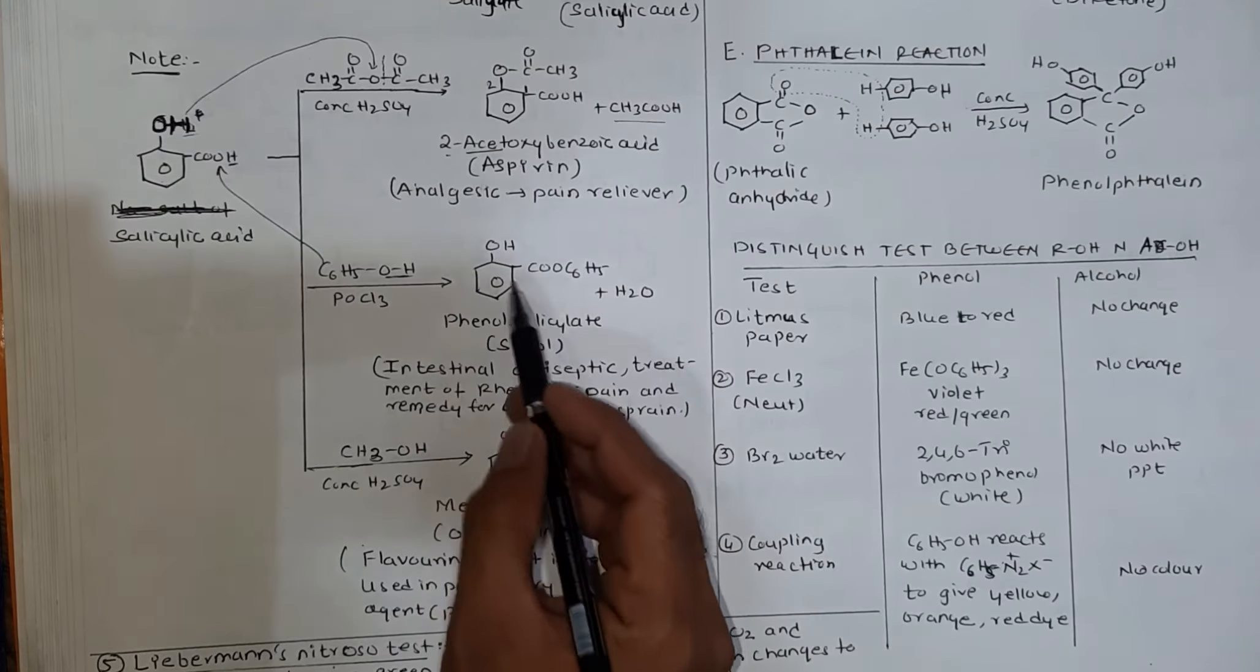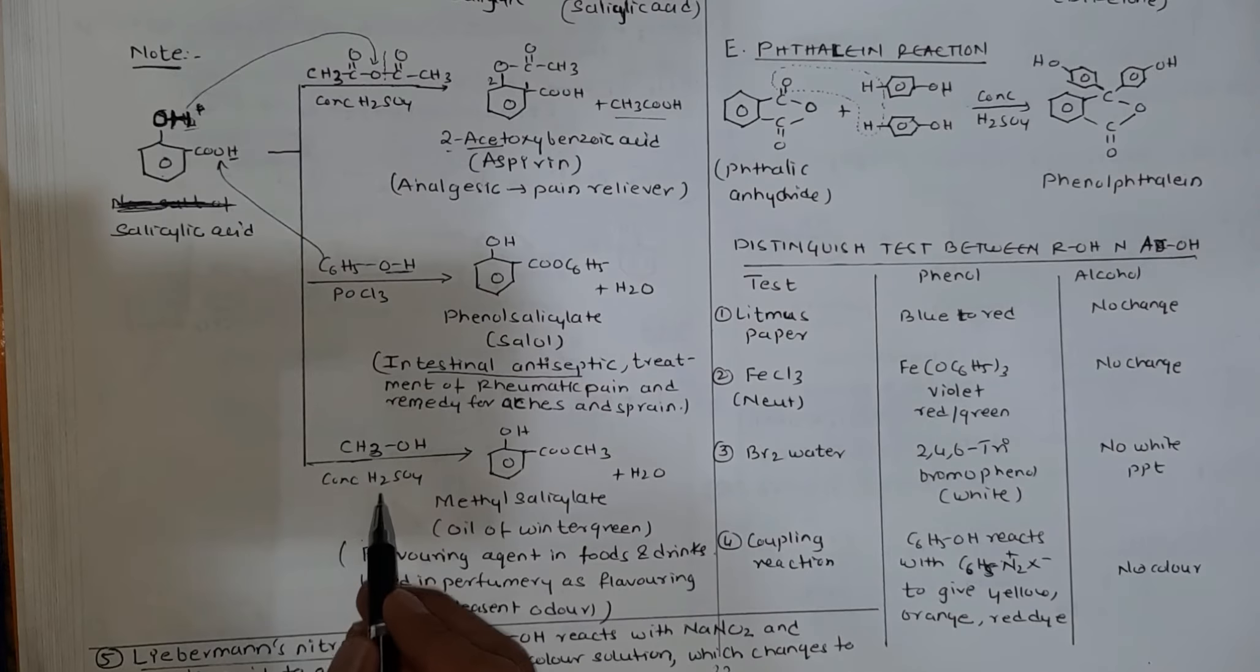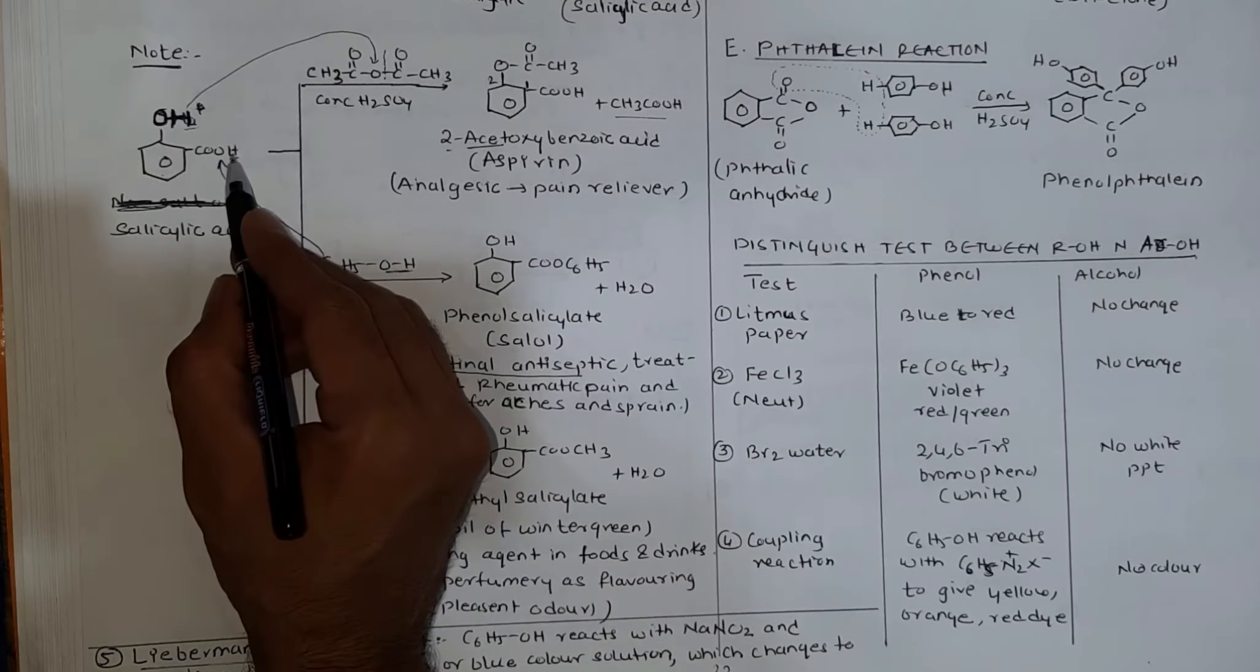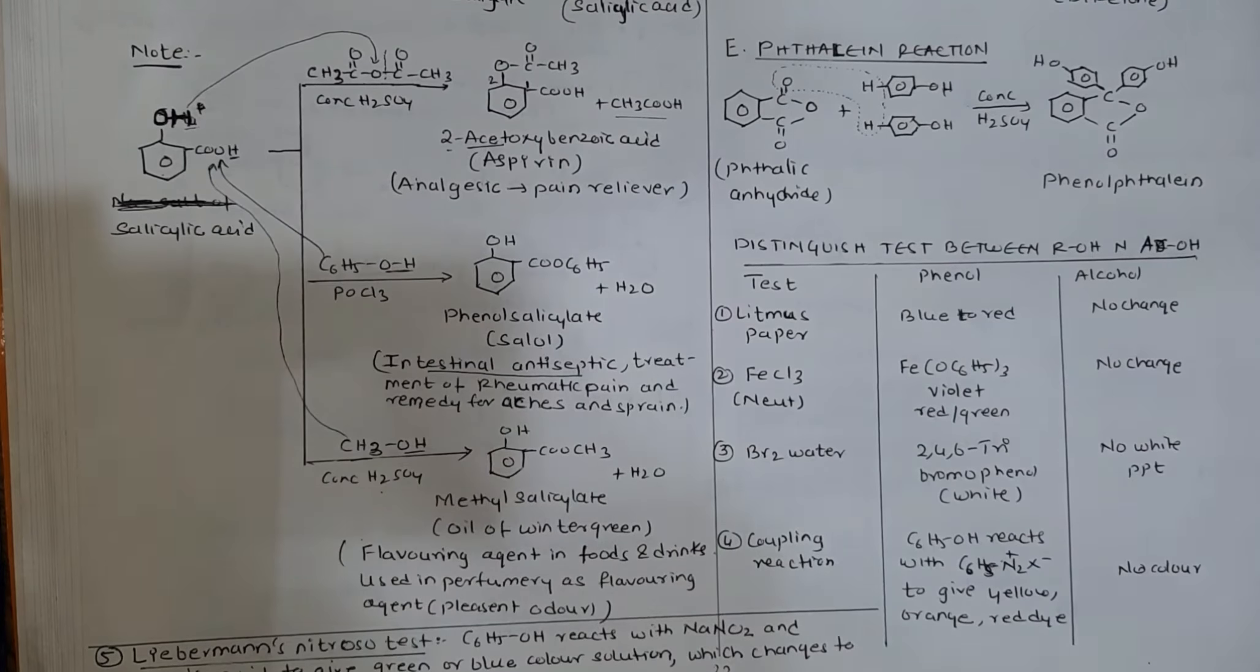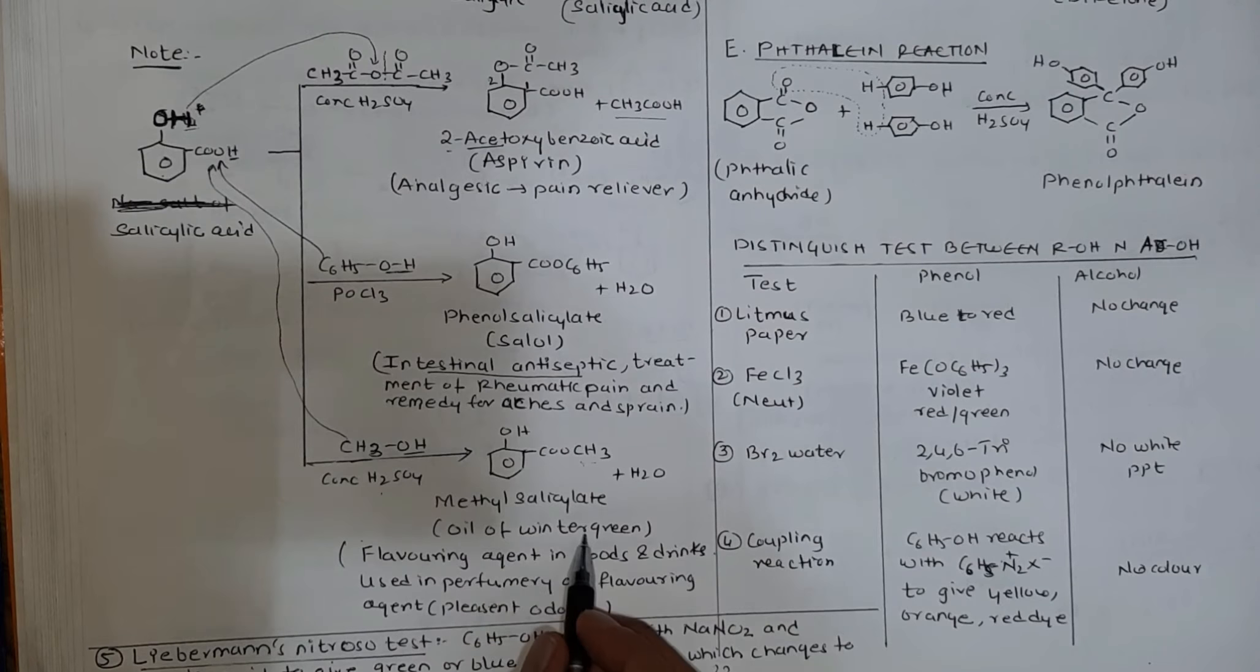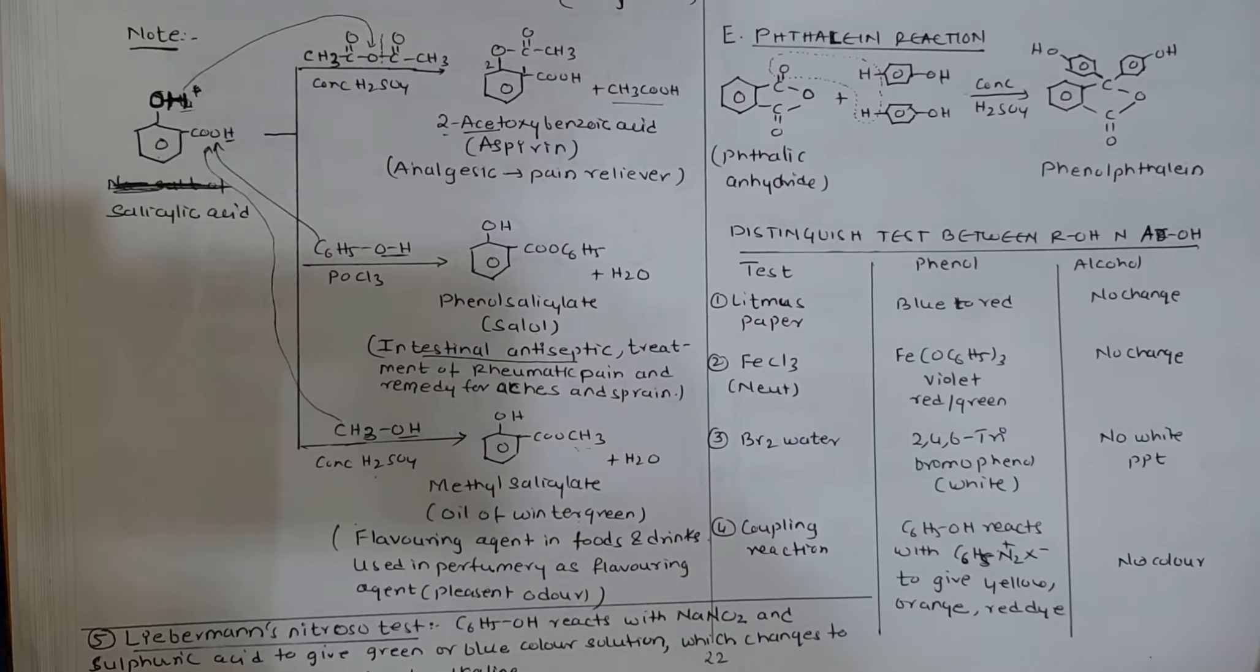If you take methanol with concentrated H2SO4, CH3 goes to O forming methyl salicylate, called oil of wintergreen. It has a pleasant smell, therefore used in perfumes, flavoring agents in food and drinks.